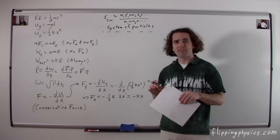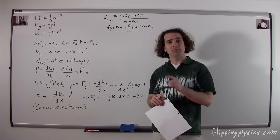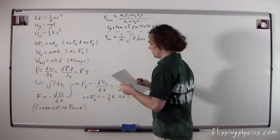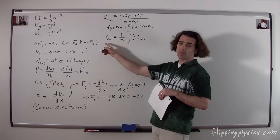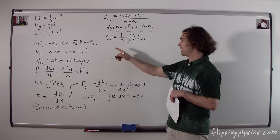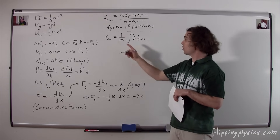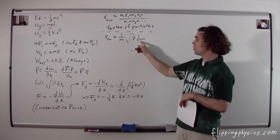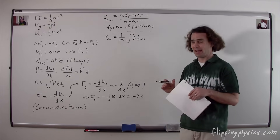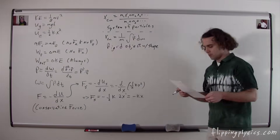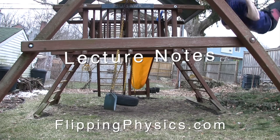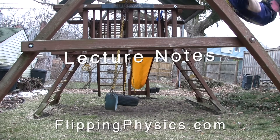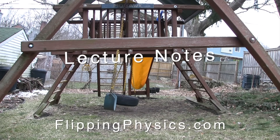If instead you have a rigid object with shape, the equation is an integral: the position of the center of mass equals one over the total mass times the integral of r dm — the position with respect to mass. Lecture notes are available at FlippingPhysics.com. Please enjoy lecture notes responsibly.